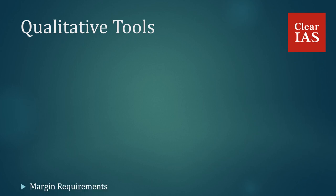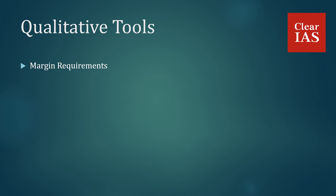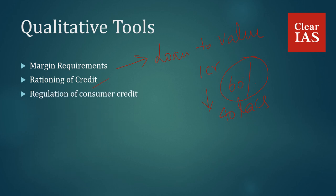Qualitative tools: Margin requirements, also known as loan to value. For example, consider you need a loan of 1 crore rupees and you have placed your collateral. However, if the RBI fixes the margin requirement at 60%, then for this value you will not be getting any credit — that is, you will be granted a loan of only 40 lakhs. Rationing of credit and regulation of consumer credit — through these two tools, the RBI controls the amount of credit available to various sectors. Also, the need for down payments can be lowered or hiked through these two tools.